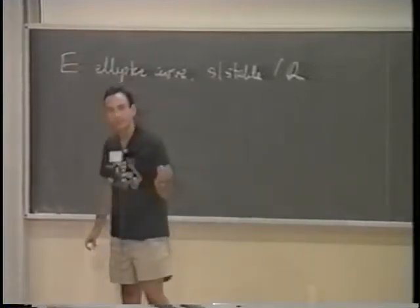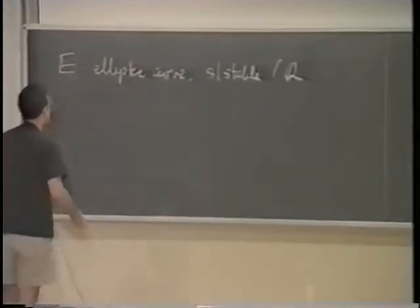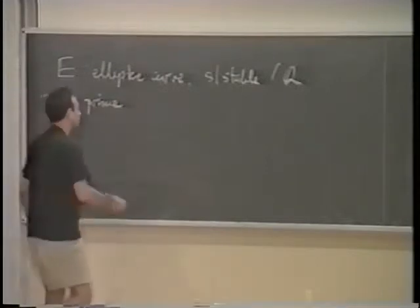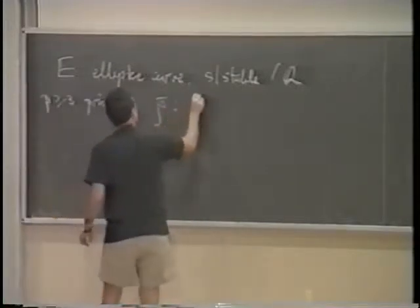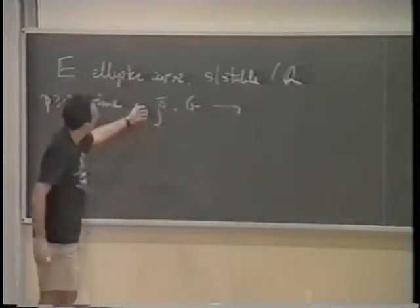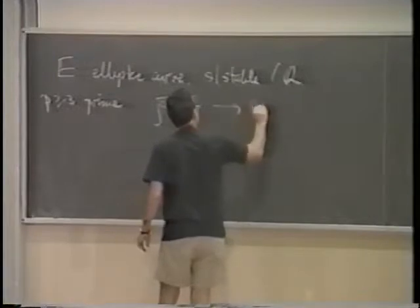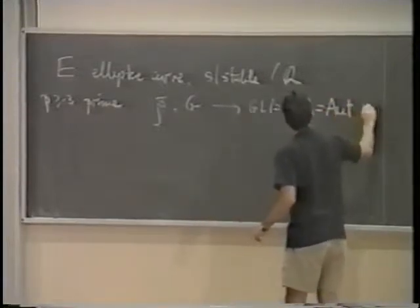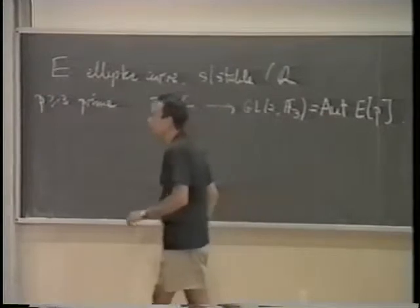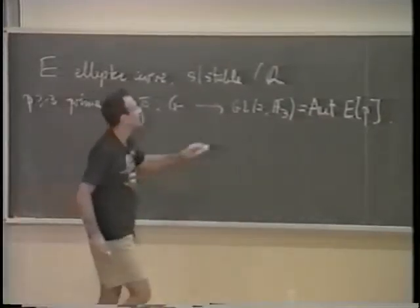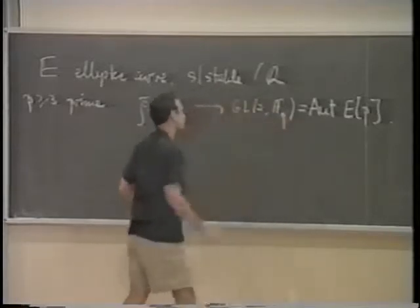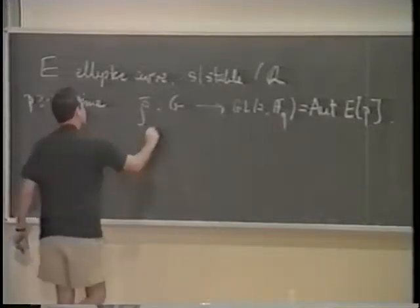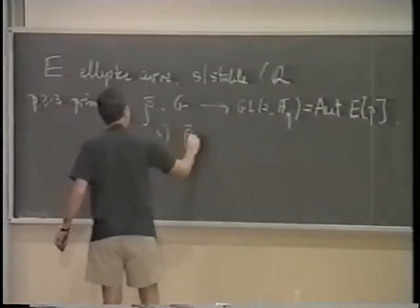We begin with a very fragmentary piece of information. Namely, we're going to take some prime p, which is different from 2, and consider the representation ρ̄ from G — the Galois group of Q — into GL₂(F₃), the automorphisms of the 3-division points of this elliptic curve. With p equal to 3, we take the automorphisms defined by the p-division points. The two assumptions are: number one, that ρ̄ is irreducible — and as various people have mentioned, this means absolutely irreducible.